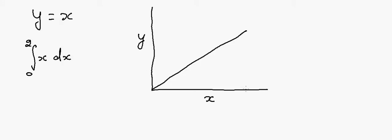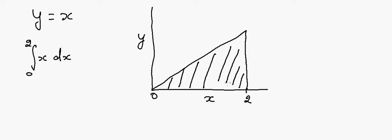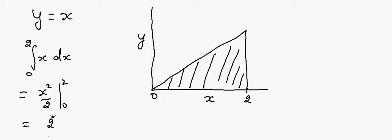So in that case what I'm asking is that I want to calculate the area under the curve from 0 to 2. If I do the integration here, it will look something like x squared by 2, evaluated from 0 to 2, and that will be equal to 2 squared divided by 2, which equals 2.